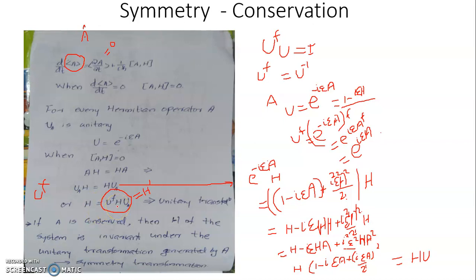This means the Hamiltonian is invariant under this unitary transformation. Transformations that leave the Hamiltonian invariant are called symmetry transformations.